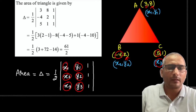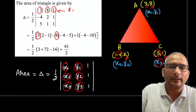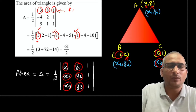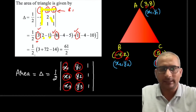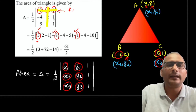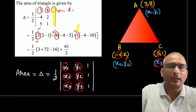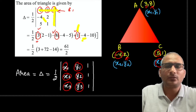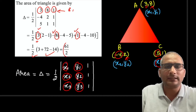We expand this determinant along row 1. The elements of row 1 are 3, 8, 1 with signs plus, minus, plus respectively. For element 3, hiding its row and column gives the 2×2 determinant with 2, 1 and -1; for element 8 with minus sign, hiding its row and column gives -4 multiplied by 1 which gives -4; and for element 1, the expansion gives the remaining terms. After full calculation, the answer comes out to be 61/2.